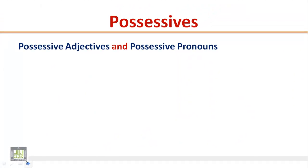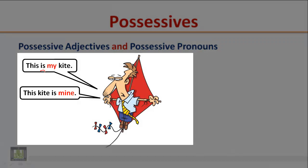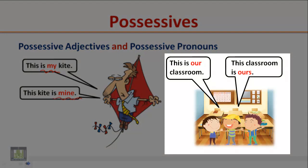Possessive adjectives and possessive pronouns. Look at the following pictures and pay attention to possessive adjectives and possessive pronouns. This is my kite. This kite is mine. This is our classroom. This classroom is ours.